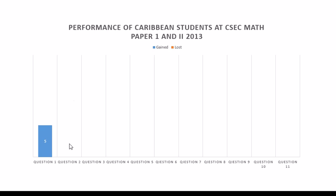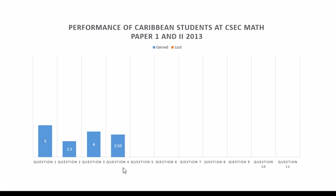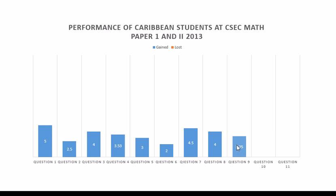So, 5 marks were lost for question 1, 2.5 for question 2, 4 for question 3, and 3.53 marks out of — I think it's 11 — for question 4, and so on. You can see the marks lost across Paper 1.